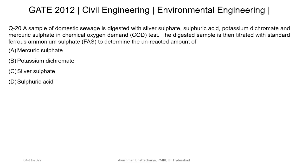There is question number 20. It came in GIT 2012. The question says a sample of domestic sewage is digested with silver sulphate, sulphuric acid, potassium dichromate, and mercuric sulphate in a chemical oxygen demand test. The digested sample is then treated with standard ammonium sulphate to determine the unreacted amount — mercuric sulphate, potassium dichromate, silver sulphate, or sulphuric acid — when FAS is used to titrate.